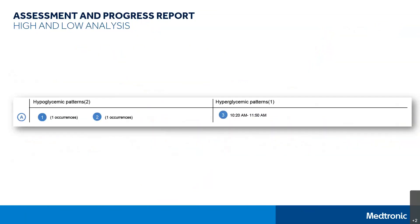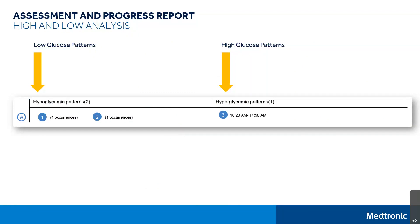Patterns on this report are broken down into groups: hypoglycemic patterns, or low glucose patterns, and hyperglycemic patterns, or high glucose patterns. As you can see in this example, this patient had two low patterns and one high pattern. If you are seeing patterns like this on your report, you may want to talk to your healthcare provider about why a pattern is occurring. It's possible that some adjustments may be needed with your settings to help you better manage your diabetes control.